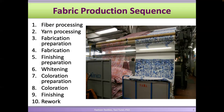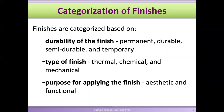Those are called routine finishes. Then we'll talk about aesthetic and functional finishes. Generally the process goes: first you make fibers, then yarns, then the fabric. There's a preparation step before fabrication, then finishing preparations — whitening before coloration, then coloration (dyeing or printing), then other finishes — and you are done with textile production.